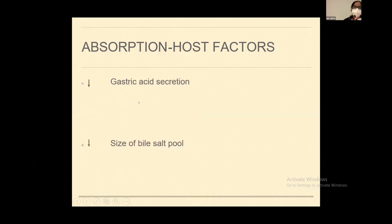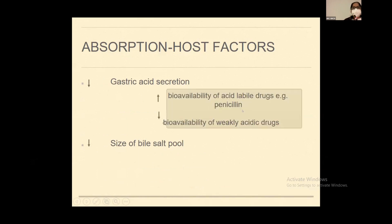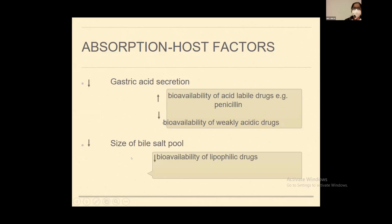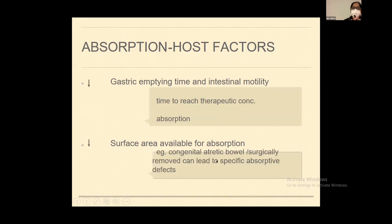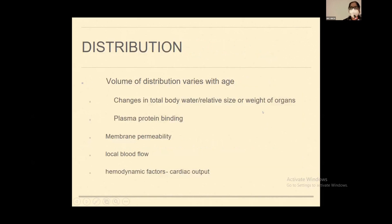Gastric acid secretion is less in children compared to adults. This can affect the viability of many drugs — specifically acid-labile drugs, whose bioavailability will be increased, while weakly acidic or basic drugs will have decreased bioavailability. The bile salt pool is also decreased, leading to decreased bioavailability of lipophilic drugs. Gastric emptying time and intestinal motility are also decreased, and the intestinal surface area available for absorption is reduced. This affects the time to reach therapeutic concentration. Additionally, conditions like congenital atresic bowel or surgical bowel resection can lead to specific absorptive defects. All these factors must be considered when calculating antimicrobial dosage in children.